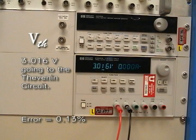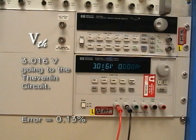To build our circuit, we use 3.016 volts. There is a 0.13 percent error between this value and the value measured. But we expect our circuit to be accurate within 1 percent of the original.